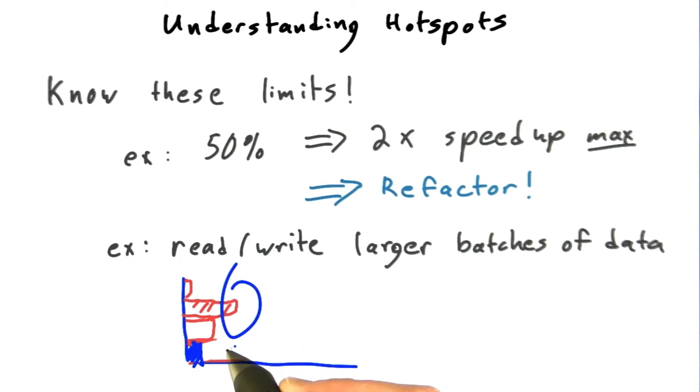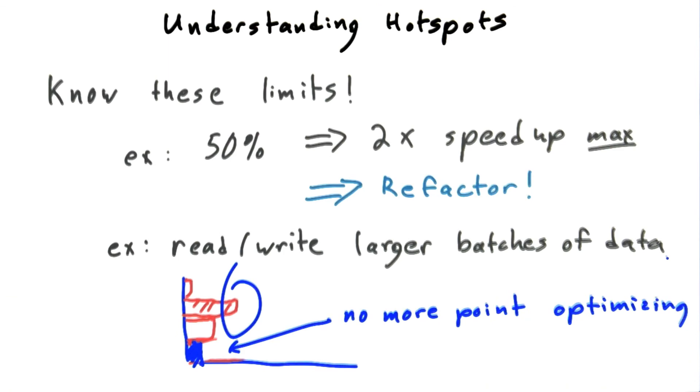And remember, once you've crossed this point, there's little point in continuing to optimize this. The total time on your application is not going to go down very much if you continue to work on this hotspot. You need to shift your attention to the new bottlenecks.